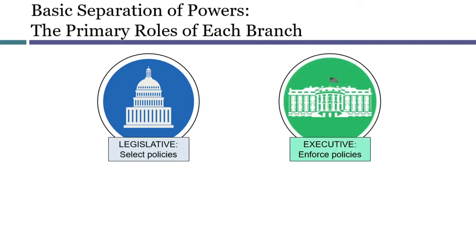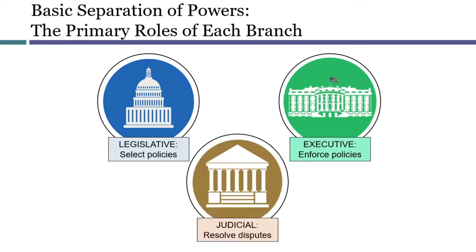A separate executive branch is responsible for carrying out and enforcing the legislature's chosen policies. Many other constitutional democracies have a parliamentary system, where enforcement is carried out by a prime minister who is selected by and answerable to a majority of the parliament. By contrast, the American president is elected separately by the people and is not necessarily politically aligned with majorities in Congress. Finally, an independent judiciary is responsible for resolving legal disputes between parties, and this can include disputes where the powers of the various branches of government are important issues.